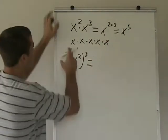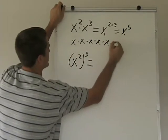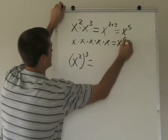And how many do you have here? 1, 2, 3, 4, 5. So that's the same as x to the fifth.